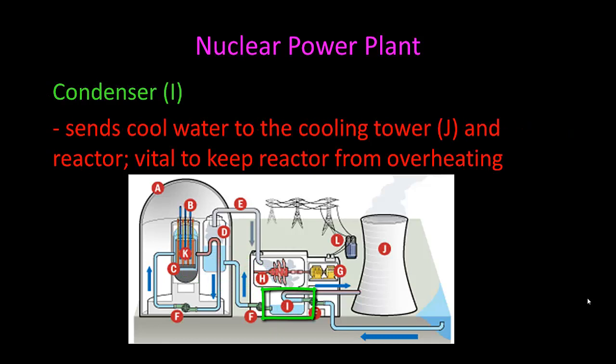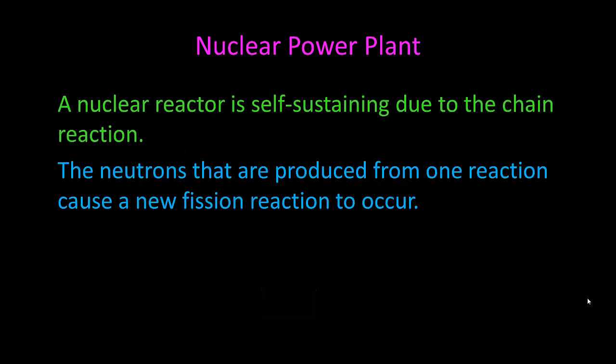The condenser sends cool water to the cooling tower and reactor, and it's vital to keep the reactor from overheating because the fission produces a lot of heat, and sometimes it may produce too much if you're not controlling those control rods very well, and you don't want it to overheat. A nuclear reactor is self-sustaining due to that chain reaction that we just talked about. The neutrons that are produced from one reaction with uranium-235 cause a new fission reaction, or three new fission reactions to occur.